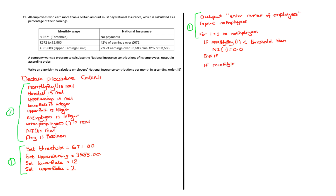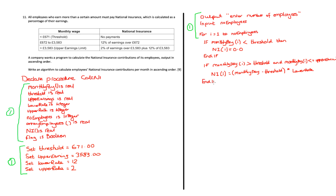The next check is whether `monthly_pay[i]` is greater than the threshold and less than or equal to upper earnings. Then `national_insurance[i]` equals `(monthly_pay[i] - threshold) × lower_rate` — that is, 12% of earnings over 672 pounds — and that result is stored in the national insurance array at position i.